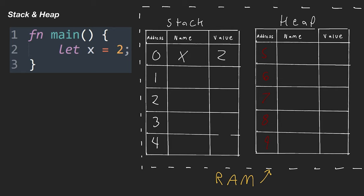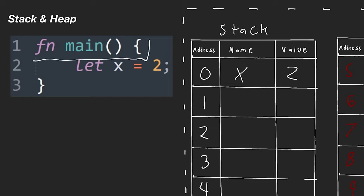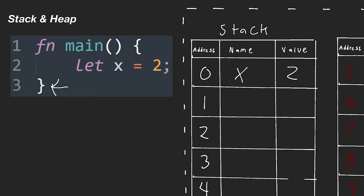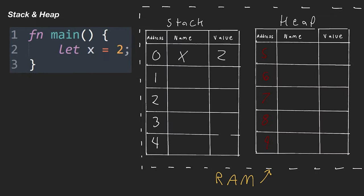The way removal works is that X is within a scope — the function or block it is defined inside of. In this case X is inside function main, within those curly braces, so it's part of the main scope. Once that scope finishes executing, Rust will automatically remove X from RAM. So we execute X, do whatever we want with it, reach the end of the scope, and then X is removed from RAM.